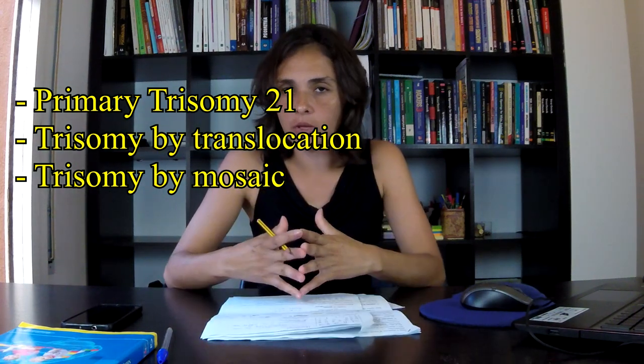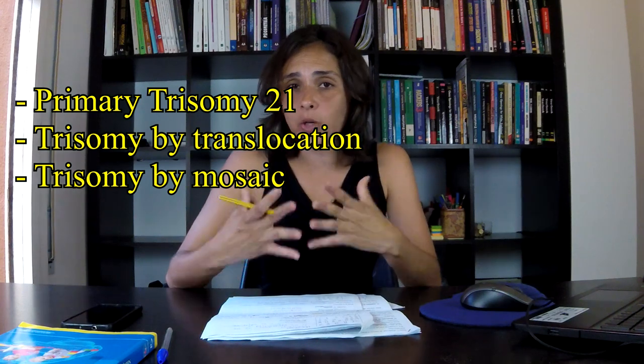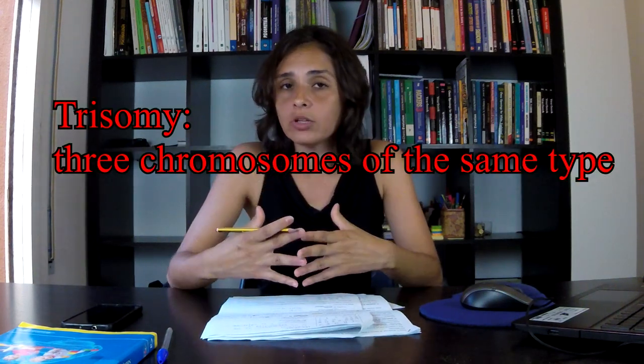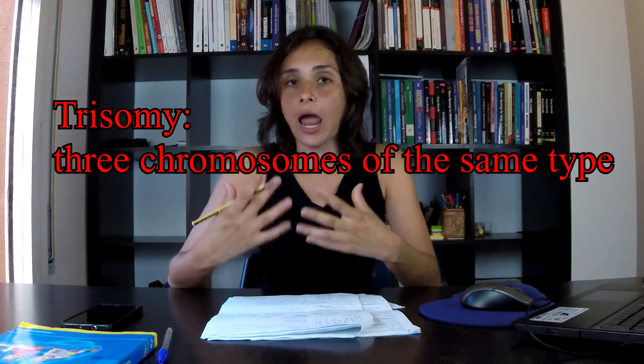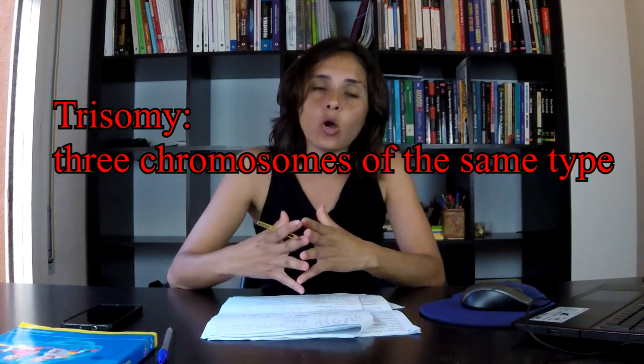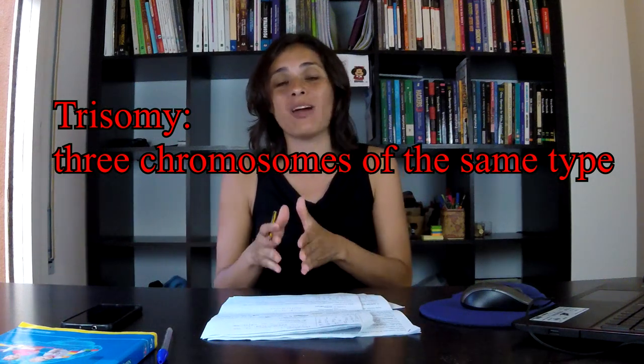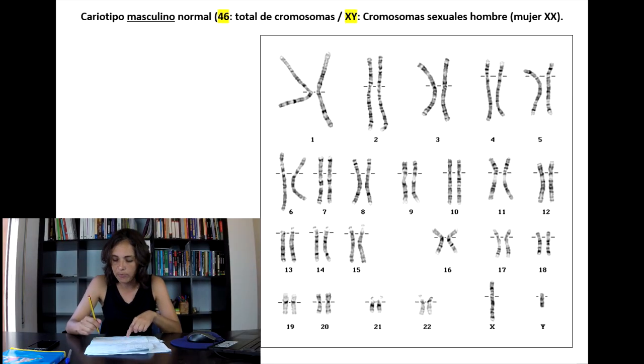But what is a trisomy? A trisomy is a situation in which we have three chromosomes of the same type instead of the pair that we can observe in a normal situation. As we can see in the picture, we observe two pairs of chromosomes in each position of the karyotype.